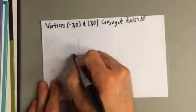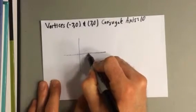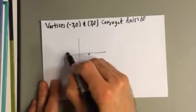So to make a quick graph of that, I would go to (7, 0) and also to (-7, 0).